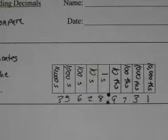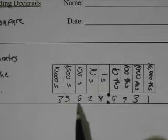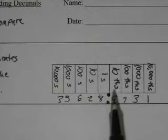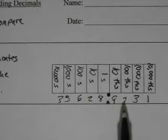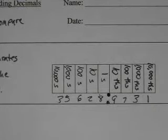So a number like 35,628.9731. In this number, this is in the ten thousandths place, thousandths, hundredths, tenths, ones. This would be tenths with T-H-S, tenths. This would be hundredths, thousandths, and ten thousandths place.